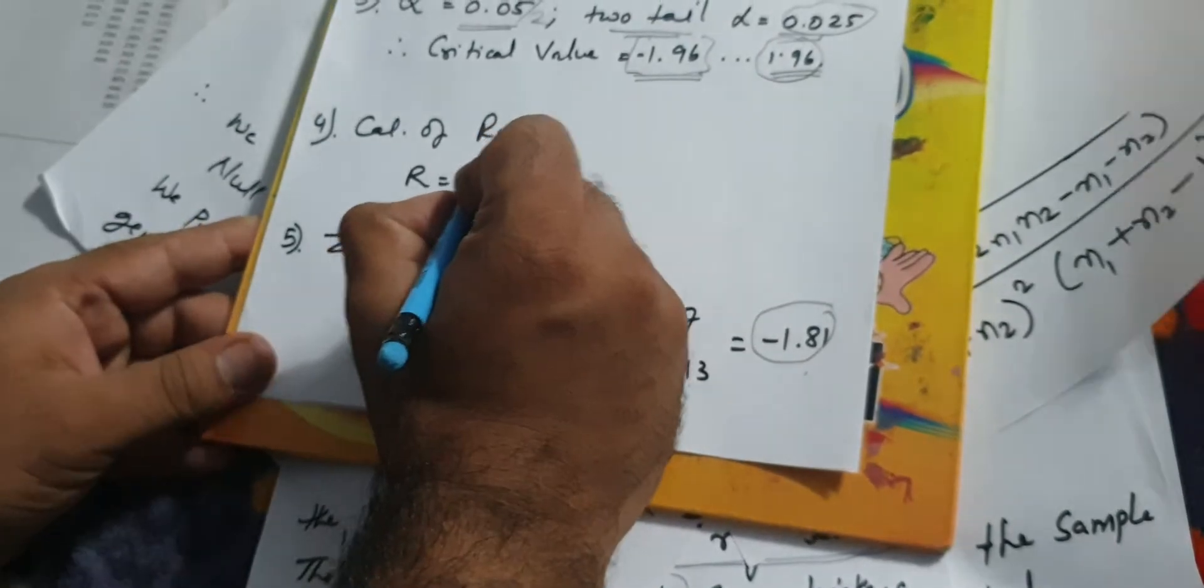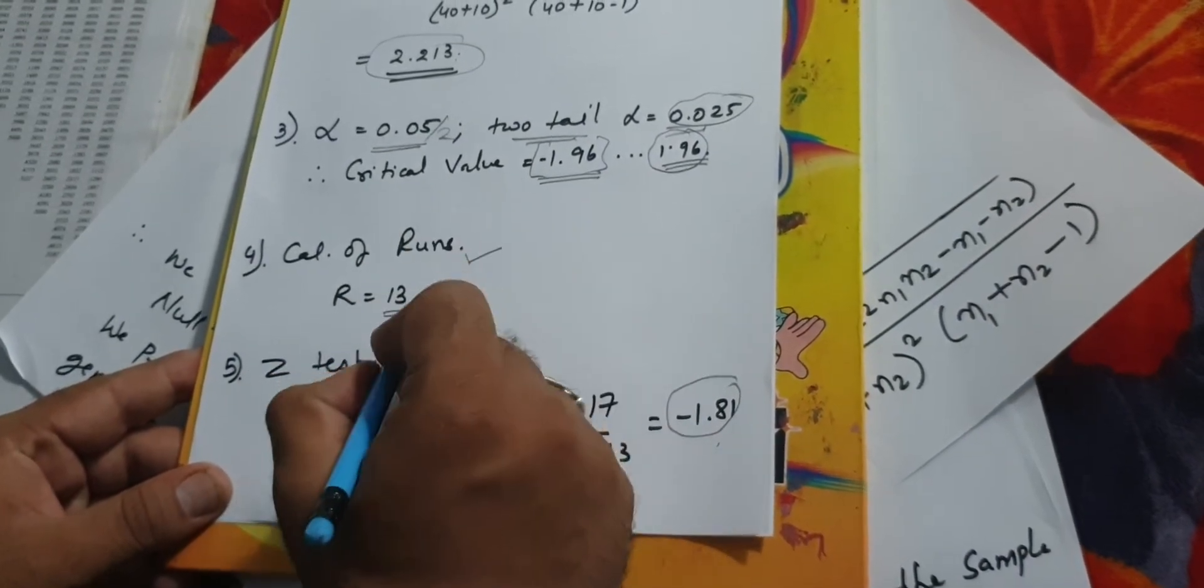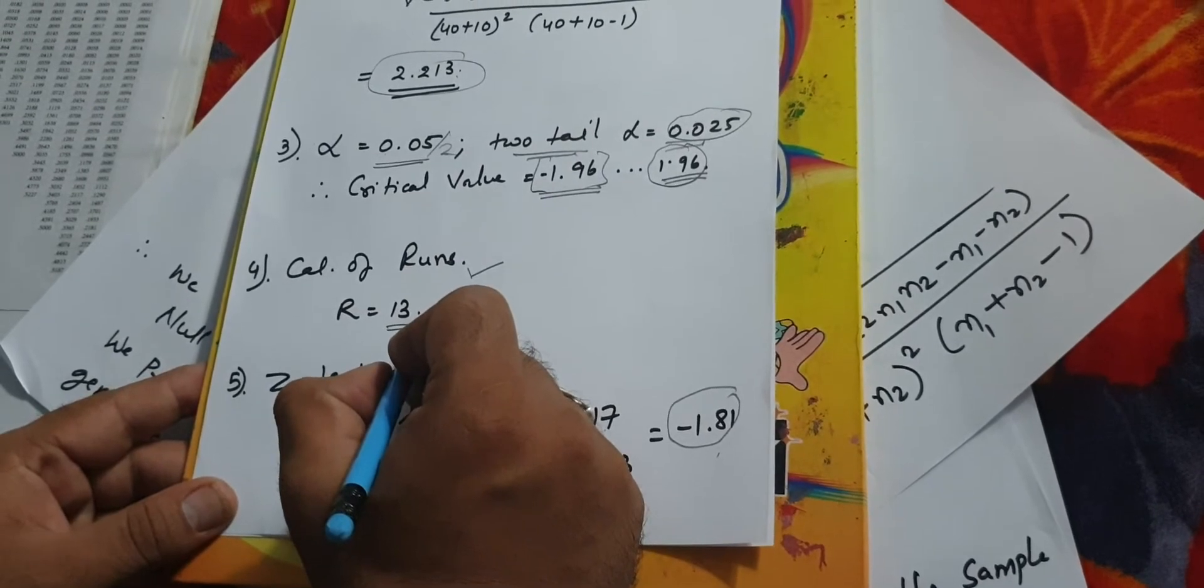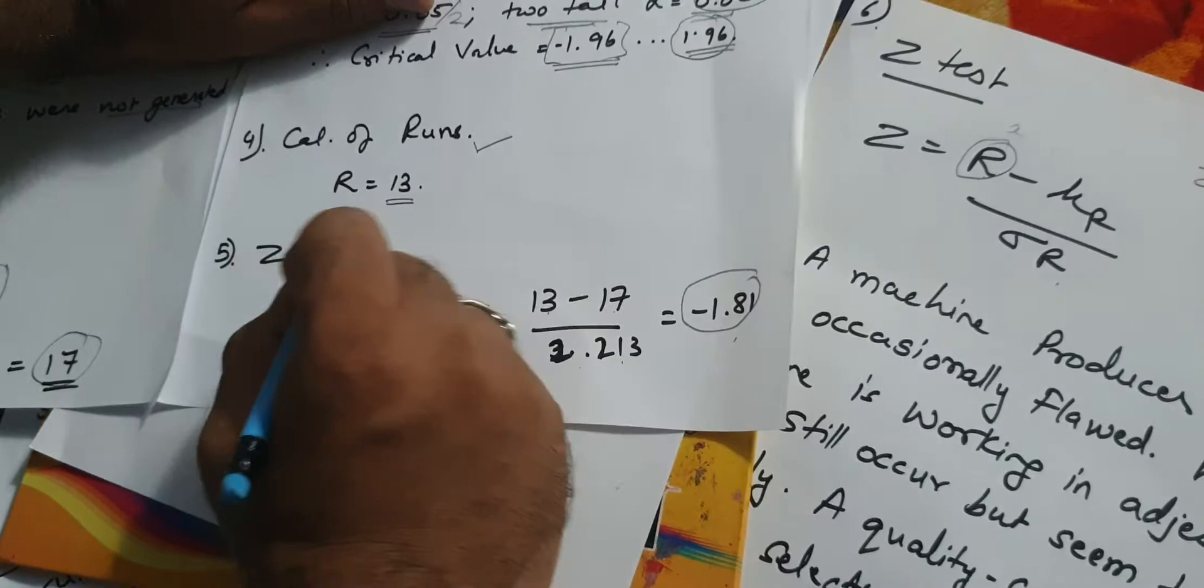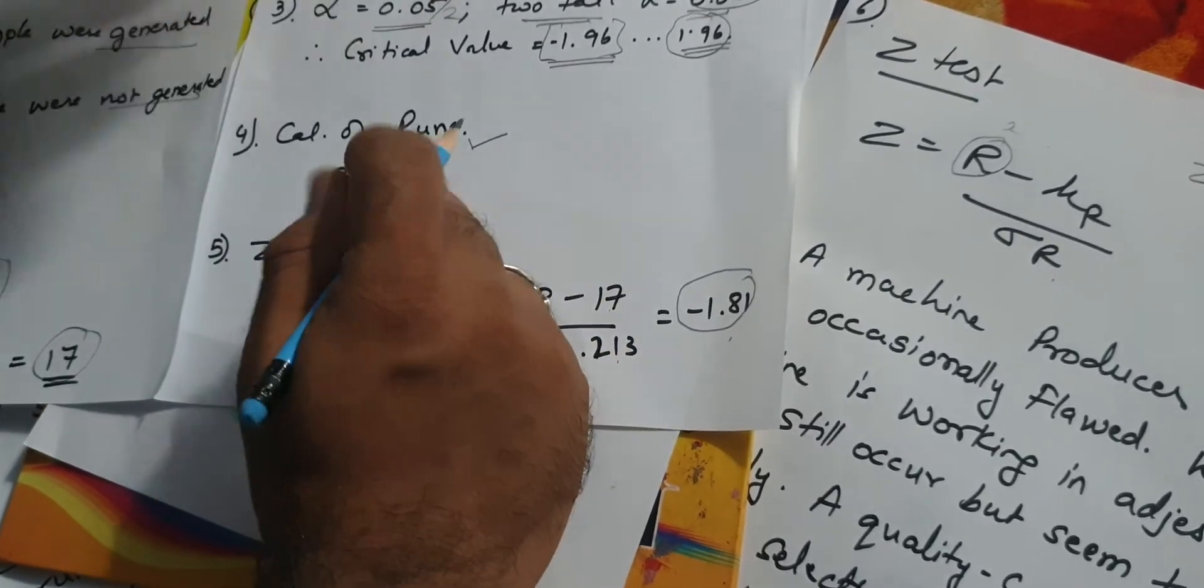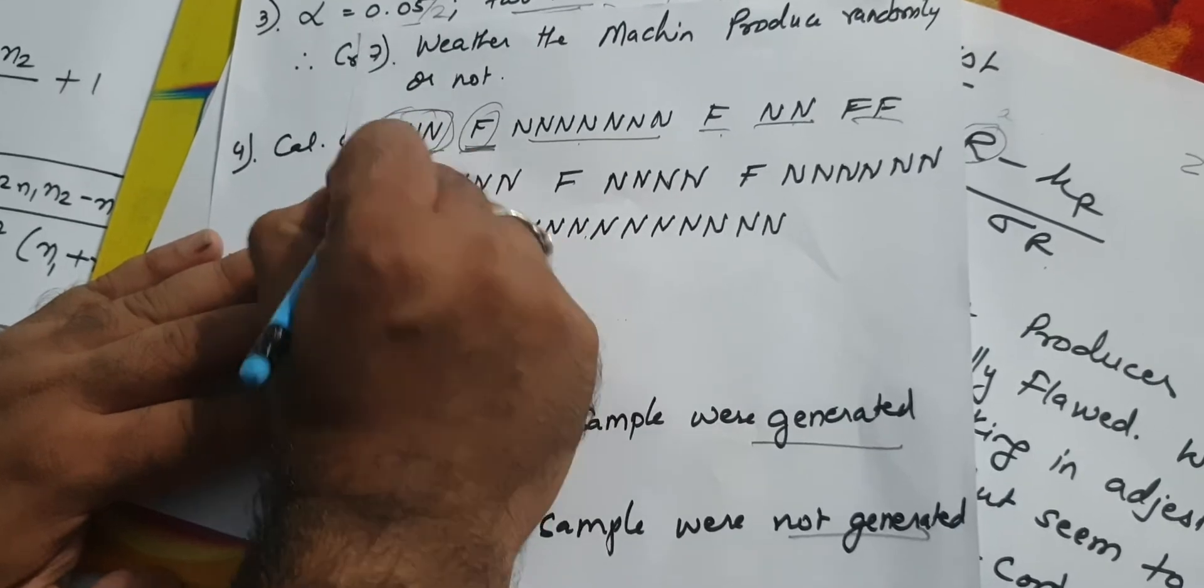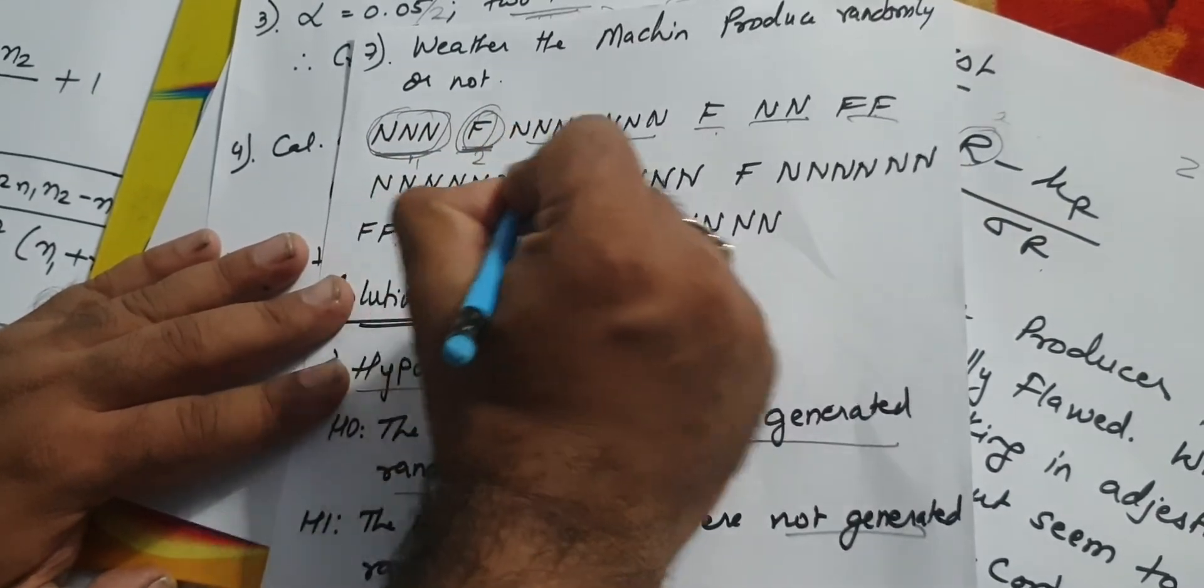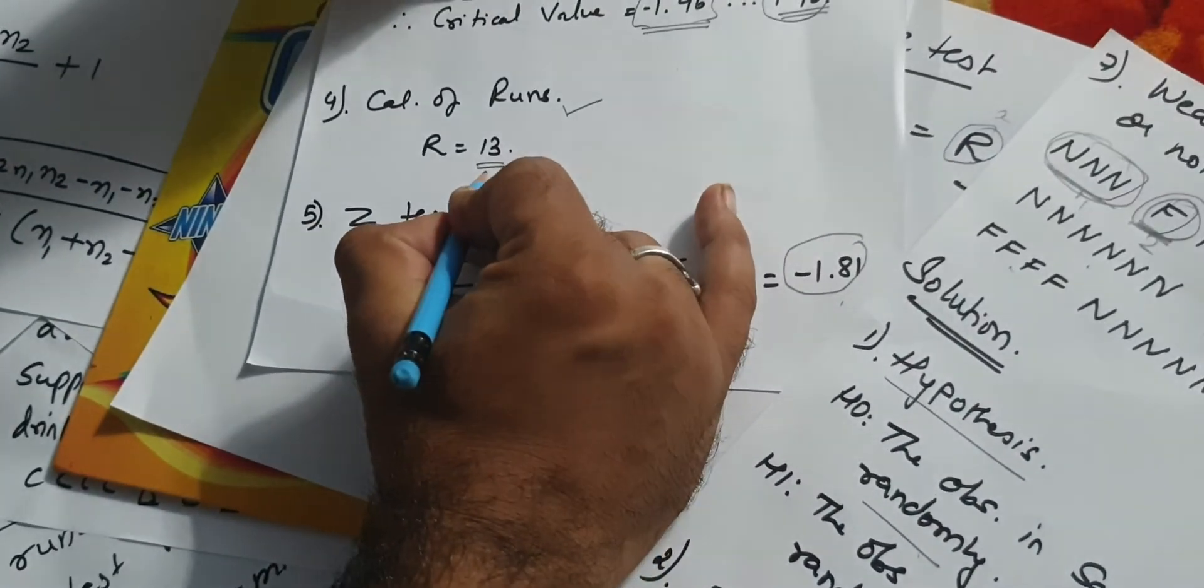The next important thing is to calculate runs. We need to calculate the runs. The 3 N's make the first run, F makes the second run, and so on. Here you would have 13 runs.